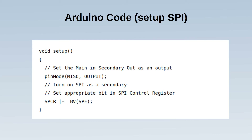For the full code there's a link in the description and on the Penguin Tutor website. On the Arduino I've used the SPI library. The setup code sets the MISO port as an output, which configures it as a secondary device, then sets the appropriate bits on the SPI control register SPCR.